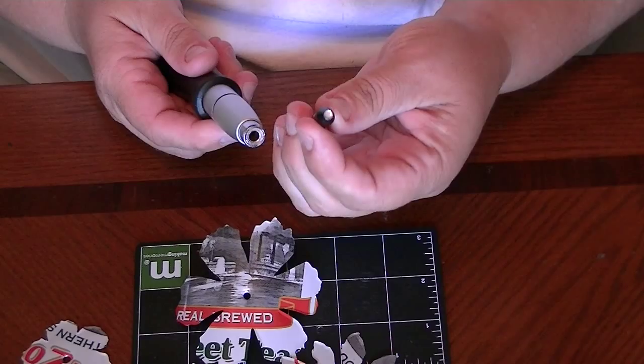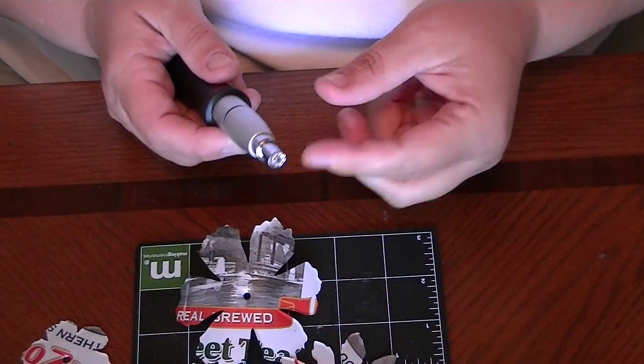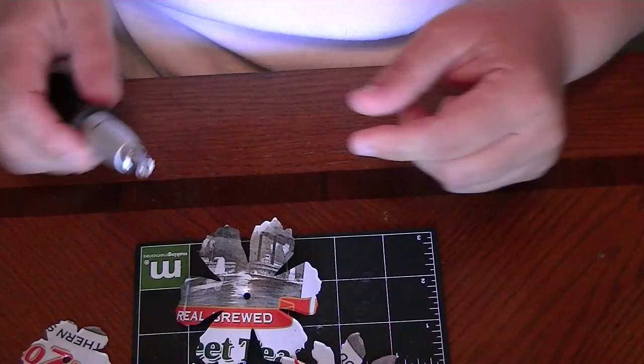Now that your holes are all made, you can take your little puncher out and put your grommet setter in. And this is magnetic, by the way. It just holds it in place really easy.